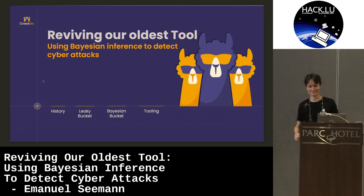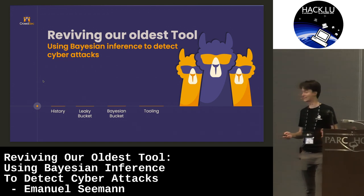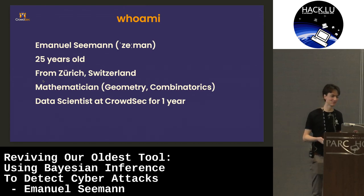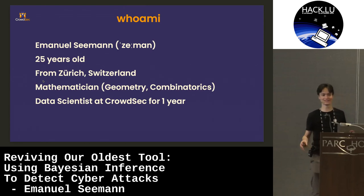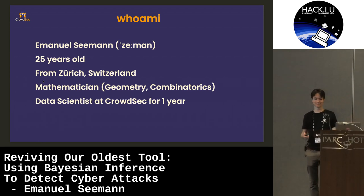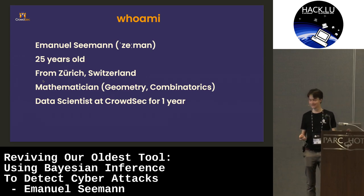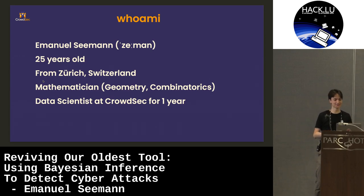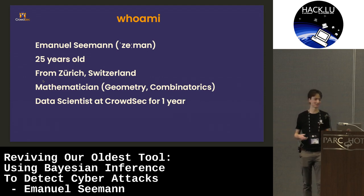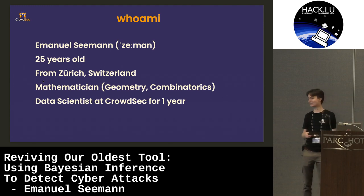Thank you. So today I prepared a little bit more than the talk on Monday, so you now get the cool slide of who I am. I'm Emmanuel Seyman — that's the pronunciation, it's a bit sketchy sometimes in English. I'm 25, I come from Zurich, and I'm going to return to Zurich at the end of the talk. I'm a mathematician. I did mostly geometry and combinatorics, and now at some point you have to realize you have to earn money, and geometry and combinatorics doesn't pay much. So I'm now a data scientist at CrowdSec, and I've been doing this for about one year.